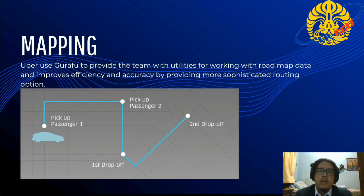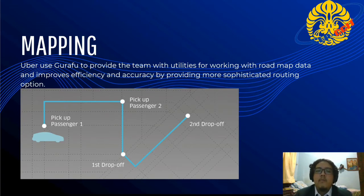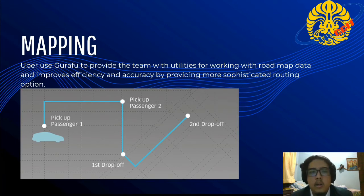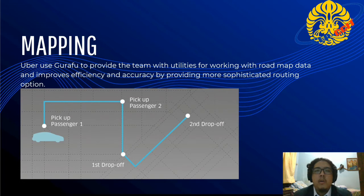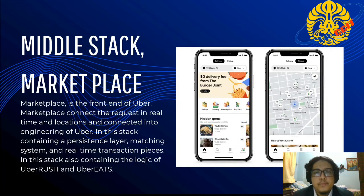For mapping, Uber uses Grafana to provide teams working on data maps, and to increase efficiency and accuracy by providing more sophisticated routing options.